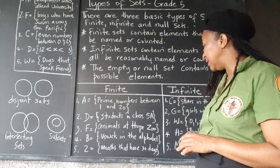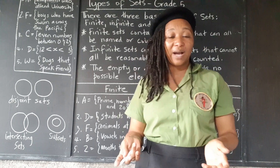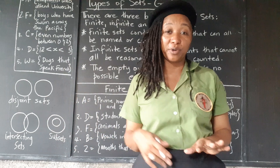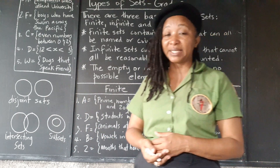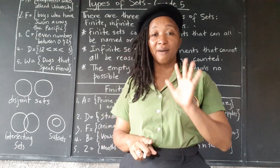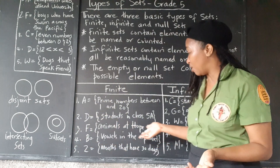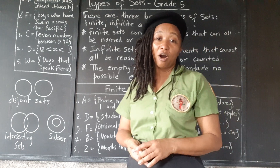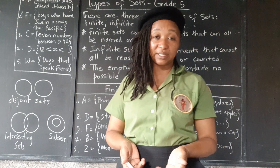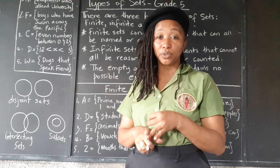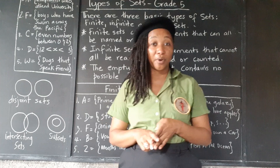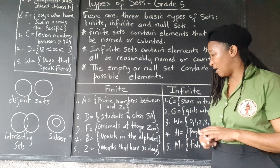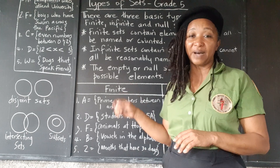Set B: vowels in the alphabet. We have a fixed number of vowels — there are five: A, E, I, O, and U. Sometimes the letter Y is thrown in, but basically five vowels. Pretty easy to count, so it's a finite set. Set Z: months that have 30 days. April, June, November, September — four months of the year have 30 days. So it's definitely a finite set.